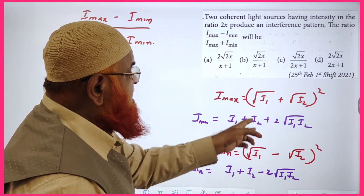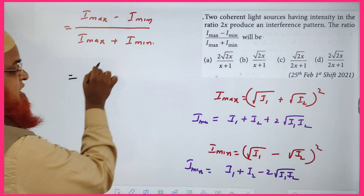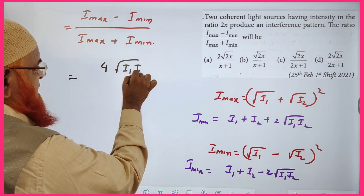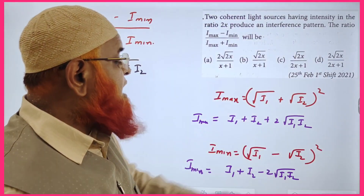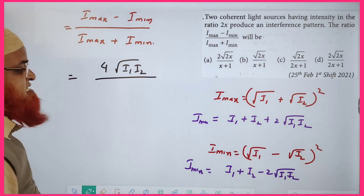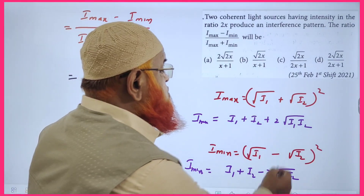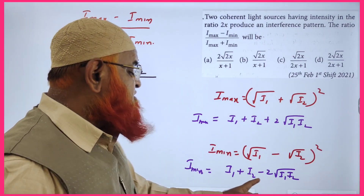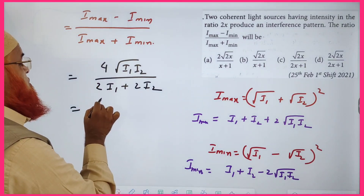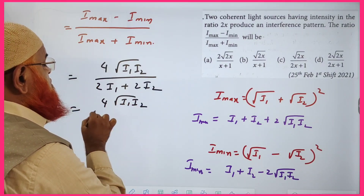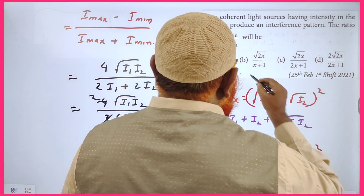Subtracting: I_max - I_min = 4√(I₁I₂), since the I₁+I₂ terms cancel. Adding: I_max + I_min = 2I₁ + 2I₂. So the ratio becomes 4√(I₁I₂) / (2I₁ + 2I₂) = 2√(I₁I₂)/(I₁ + I₂).